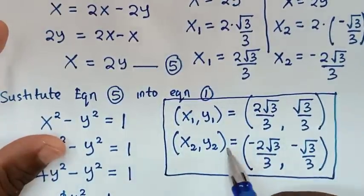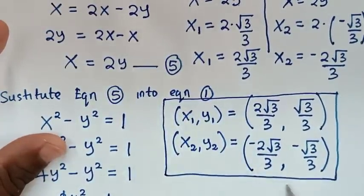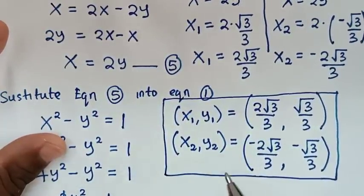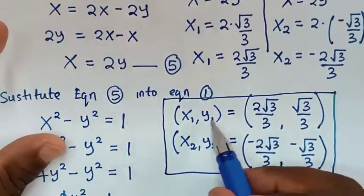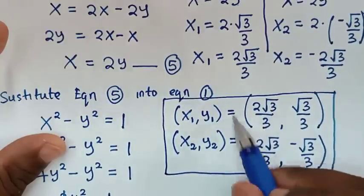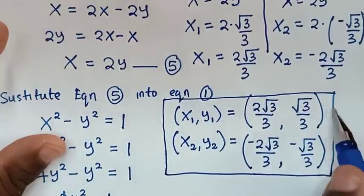For our conclusion, the first solution is (x₁, y₁) = (2√3/3, √3/3) and the second solution is (x₂, y₂) = (-2√3/3, -√3/3). These are the two solutions of x and y. Now to check if these answers are correct, let's verify the first solution.